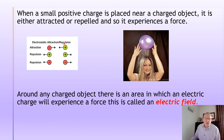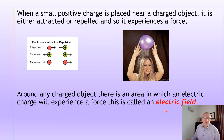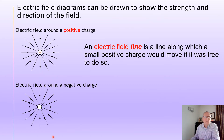This area around a charged object where another charge will experience a force is called an electric field. So if you imagine the area around about that positive charge, there will be a force. It's a bit like a magnetic field — the area around a magnet where if you brought up something magnetic or another magnet there would be a force either pulling it towards it or pushing it away. We'll look at that in more detail in the next slide.